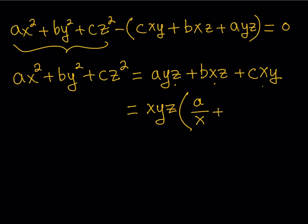And then to get b, x, z, you have to multiply x, y, z by b over y, like bye bye. And then plus c over z. Because the z is going to cancel out. You're going to end up with c, x, y. Which is what you want, right? Cool.